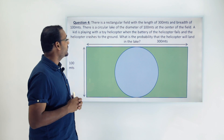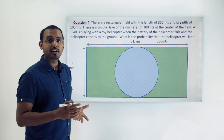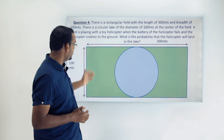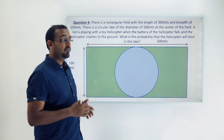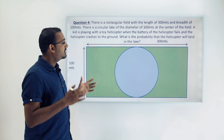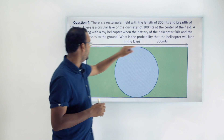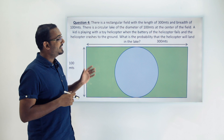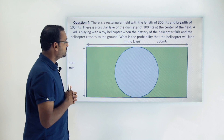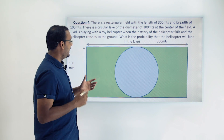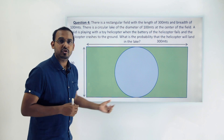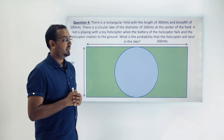A kid is playing with a toy helicopter. When the battery of the helicopter fails, it crashes somewhere in this region — it might have crashed in the field or in the lake. What we have to calculate is the probability that the helicopter lands in the lake, assuming it can land anywhere in the whole area. But we cannot count all the points on the field, so how do we calculate the probability?